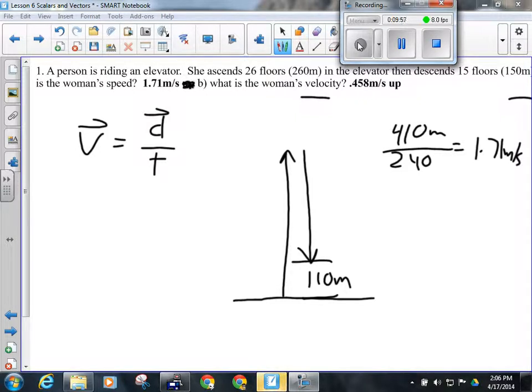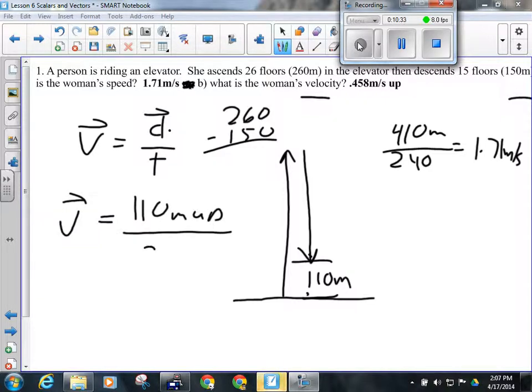That should not have an up on it, because it's scalar. Now, the second part, what's the woman's velocity? Well, velocity is displacement over time. So, now I go 260 minus 150. That tells me how far I am from where I started, not how far I went. Everyone follow the difference there? Distance is how far you went. Displacement is how far you ended up from your starting position. Sometimes, they're the same number. If you travel in a straight line, and you only go one direction, they're the same number. But, in this case, we backtracked. So, for velocity, we've got 110 meters up divided by 240 seconds. So, when we do that, we get 0.458 meters per second up. It's essentially the same. You just have to remember now that direction makes a difference.